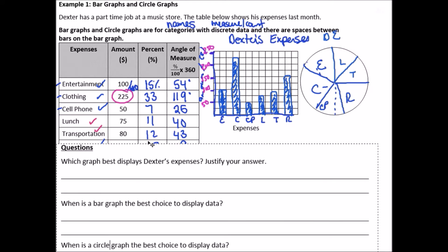So again, bar graphs show the amount for each category and the bars do not touch. Okay. And the circle graph shows the proportion of, for example, in this case, Dexter's expenses, like total expenses that each of these expenses took up. Okay. I just go to these three questions over just the bottom here. So let's talk about this. Which graph displays Dexter's expenses? Justify your answer.